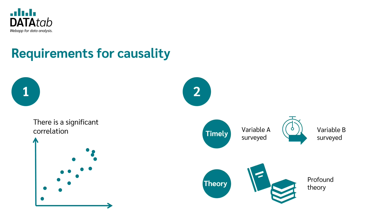The second condition can be satisfied in two ways. First, it is satisfied if there is a temporal ordering of the variables, so variable A was collected temporally before variable B. Furthermore, the second condition can be fulfilled if there is a theoretically founded and plausible theory in which direction the causal relationship goes.